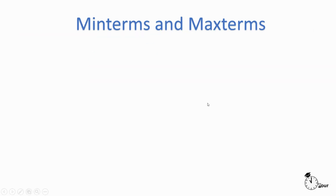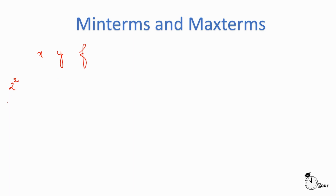Let us begin with the canonical form of representation. But before we do that, we have to understand what min terms and max terms mean. Say I want to design a logic circuit where the inputs are x and y and the output is f. Now x could either be 0 or 1, y could either be 0 or 1, and f also could either be 0 or 1. So the inputs could have 2 to the power 2, that is 4 combinations.